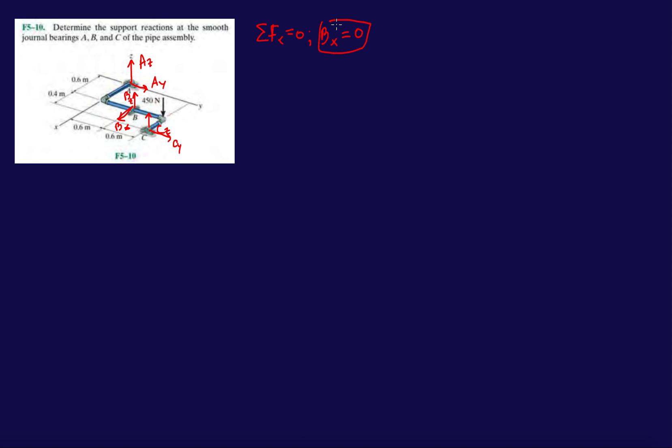The next one will be forces in the Y direction. So in the Y direction we have A_y plus C_y, that's it. And last but not least forces in the Z. We have A_z, B_z minus 450. Let's not forget that one like I did in the last problem. And we have C_z plus C_z.